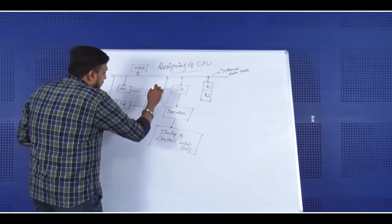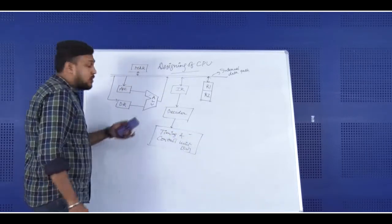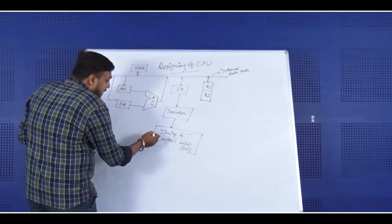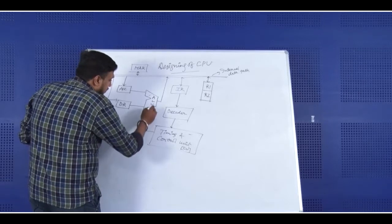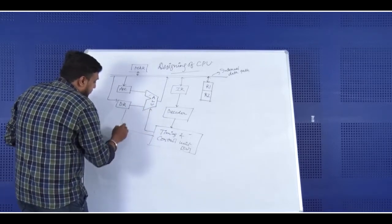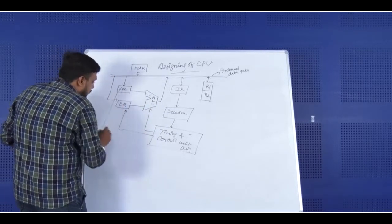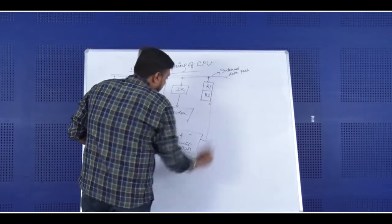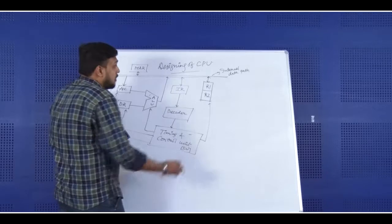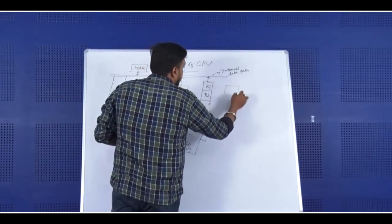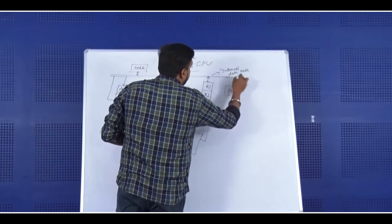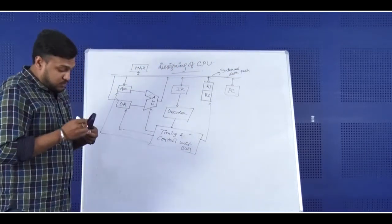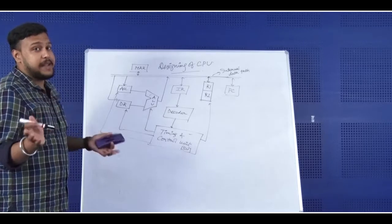So these two — ALU and CU — are the most essential parts of the CPU. The timing and control unit will give the control signals to almost all the devices of the CPU. Here, we will also have one special purpose register — the Program Counter or PC — whose job is to hold the address of the next instruction.